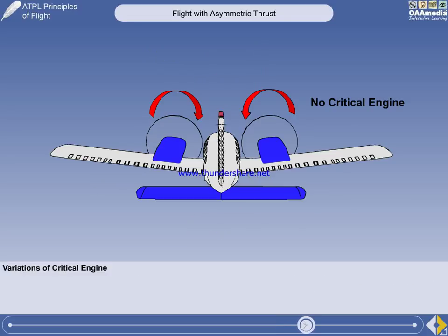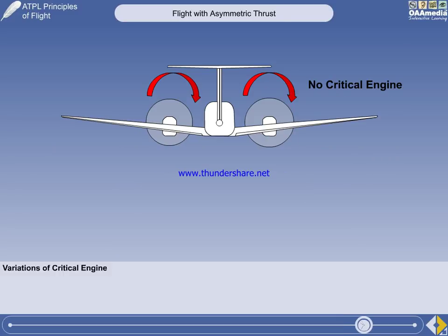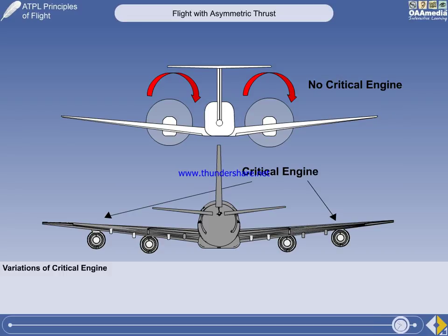To overcome the disadvantage of having a critical engine on smaller twins, their propellers may be geared to rotate in opposite directions, or counter-rotate, with the down-going blades inboard, giving both engines the shortest possible thrust arm. Bigger turboprop aircraft, such as the King Air and larger, will have co-rotating propellers turning in the same direction. In the case of four-engine jets, either outboard engine will be a critical engine.